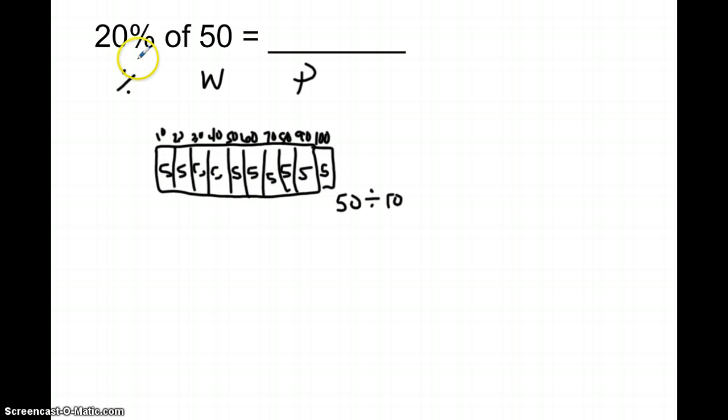Okay, so each piece is worth 5, but I only want 20% of it, so I look here at 20%. Well, how much does 20% make? 5 plus 5, which would equal 10.